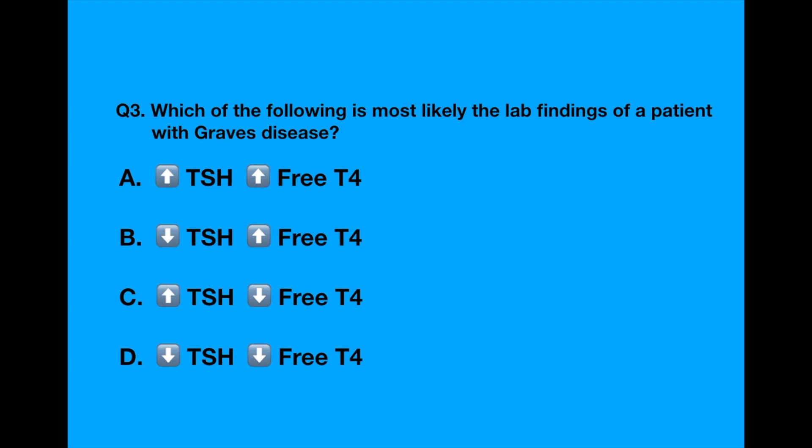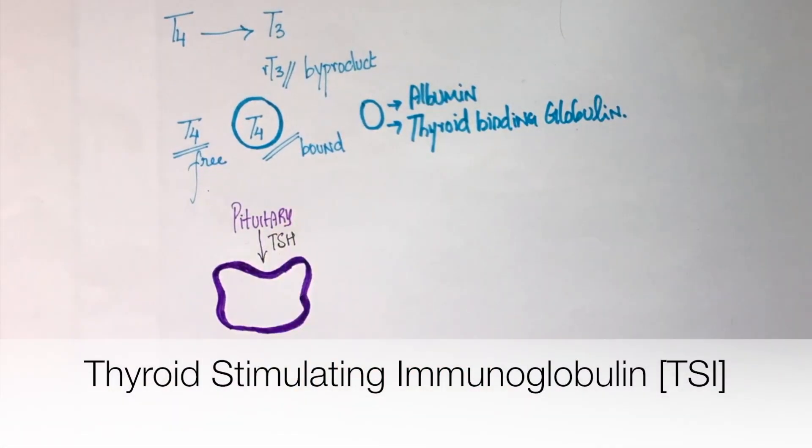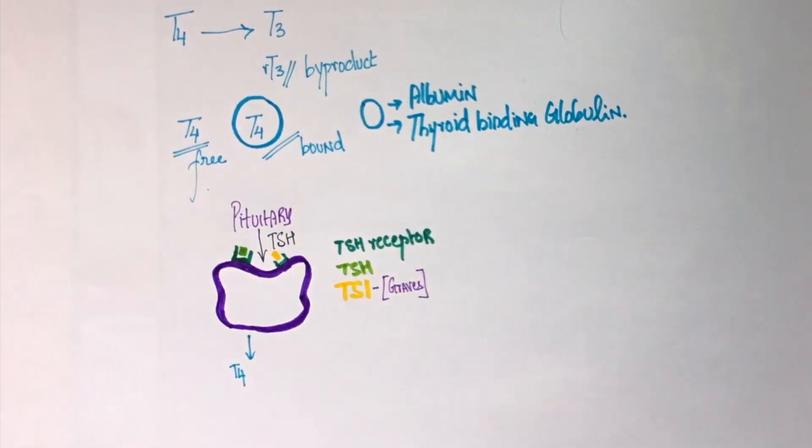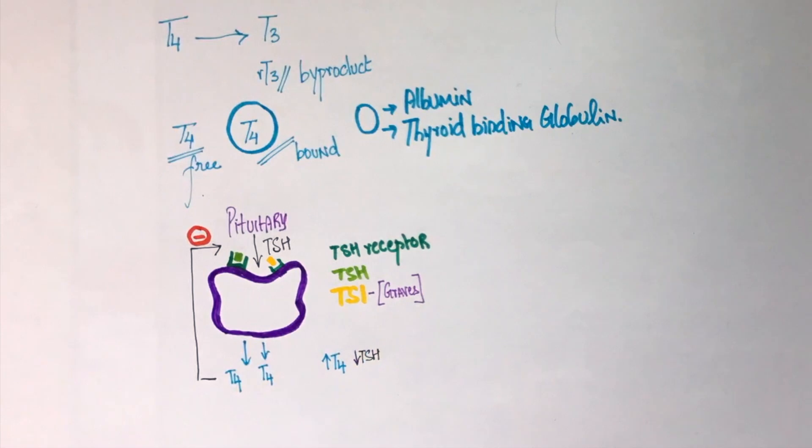In Graves disease, there is an antibody known as thyroid stimulating antibody. It binds to the TSH receptors on the thyroid gland. It works exactly how TSH does and it increases the amount of thyroid hormone in the blood. An increase in free T4 results in symptoms of hyperthyroidism. Furthermore, the increase in free T4 causes negative feedback on the pituitary leading to a decrease in TSH levels.